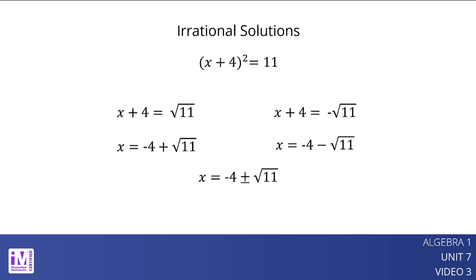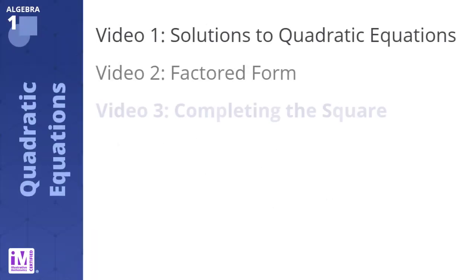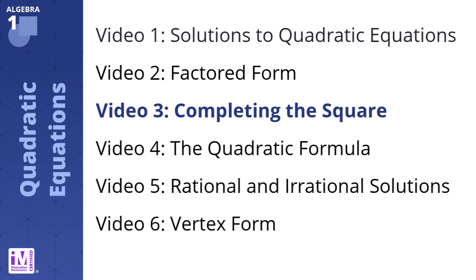We can use a calculator to compute the approximate values of both expressions. So, x is about negative 0.683 or x is about negative 7.317. Thank you for watching video 3 of 6 for this unit on quadratic equations.